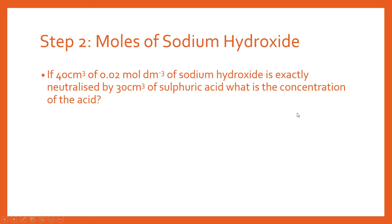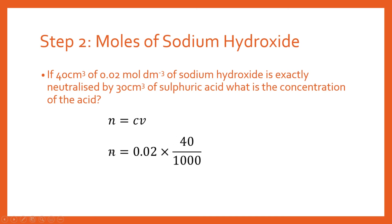The second step is to find the moles of sodium hydroxide. We've got everything we need: the volume and the concentration. Remember, the volume has to be in the same units as your concentration — we've got cm³ here, so you're going to have to do a conversion. The formula is the classic one: n = cv, where n is the number of moles, c is concentration, and v is the volume. You simply do concentration times volume, dividing by 1000 for the conversion, and we end up with 8 × 10⁻⁴ moles of sodium hydroxide.